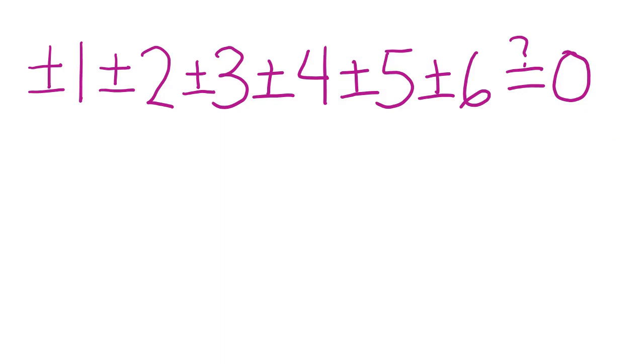The second problem asks if we could somehow add or subtract the numbers from 1 through 6 in order to end up with 0. If you try it for a bit, like the first problem, the answer seems to be no. But how can we prove this with invariants? It doesn't seem like there's a process we can use. But there is, if we are a little creative.